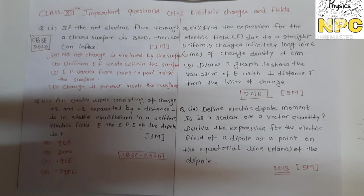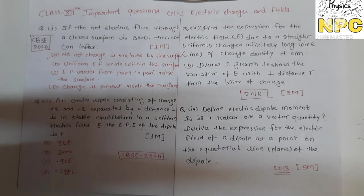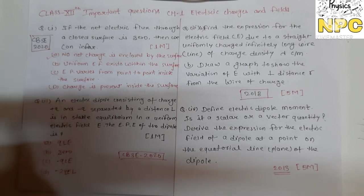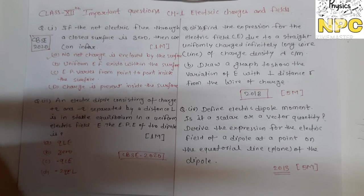Next question: an electric dipole consisting of charge plus q and minus q separated by a distance l is in stable equilibrium in a uniform electric field. The electric potential energy of the dipole — the answer will be minus q into a.